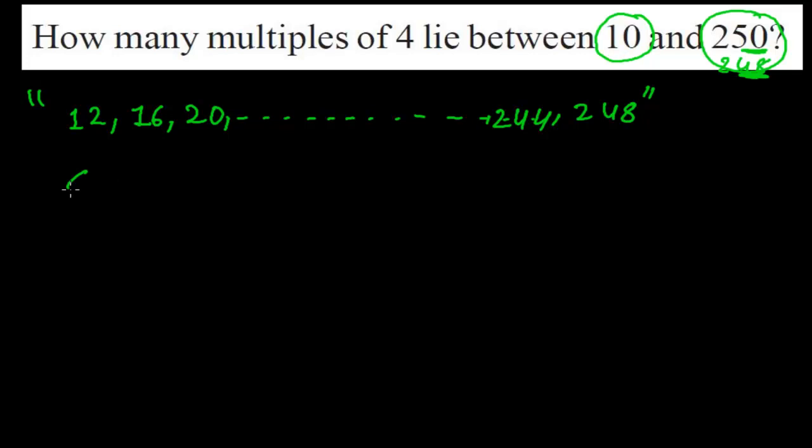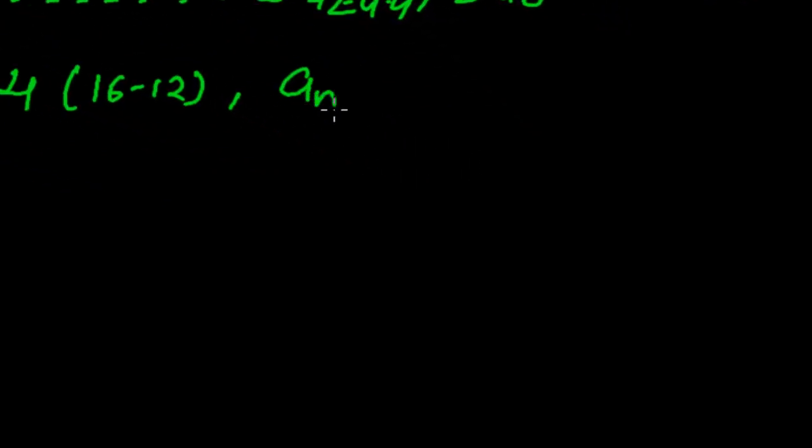So here our first term is 12. The common difference is, of course, all numbers are divisible by 4, that's why it will be 4, the common difference. If you want to write, then you can write 16 minus 12 is equal to 4. And the last term here is 248.